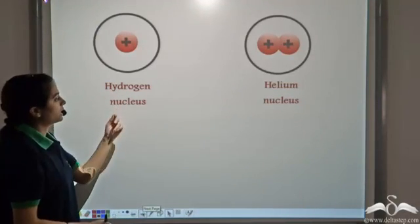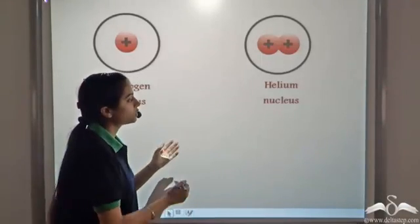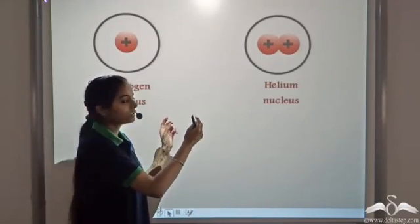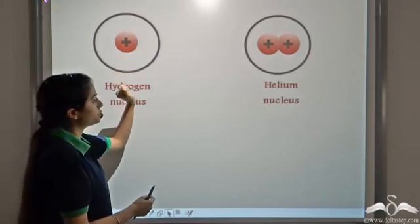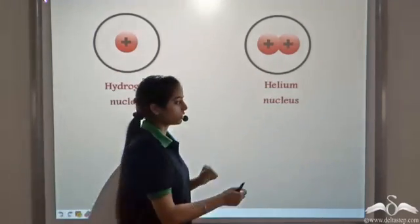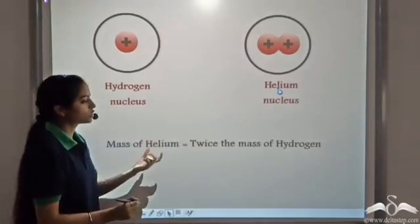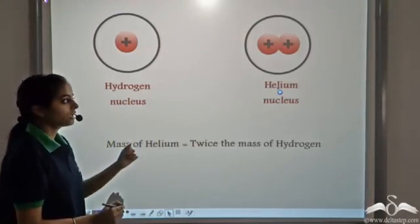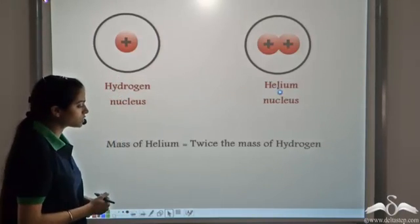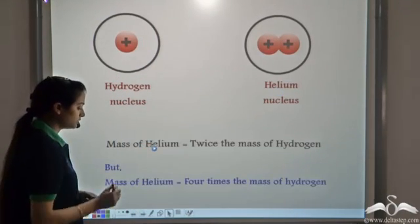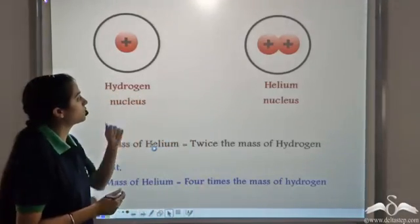Scientists took two nuclei — the hydrogen nucleus and the helium nucleus. We know that the entire mass of an atom is concentrated in the nucleus. Hydrogen has one proton and helium has two protons. So the mass of helium should be twice the mass of hydrogen. But when experiments were performed, it was observed that the mass of helium was four times the mass of hydrogen.